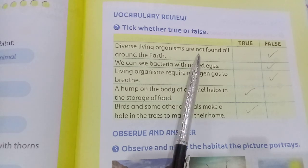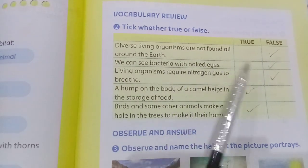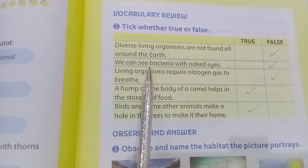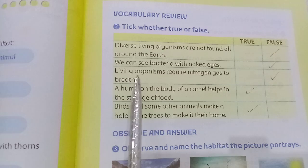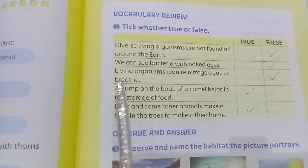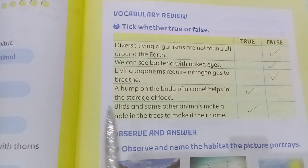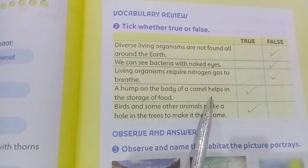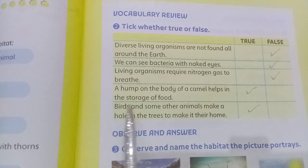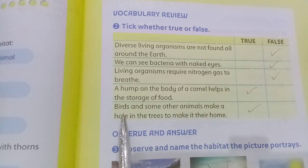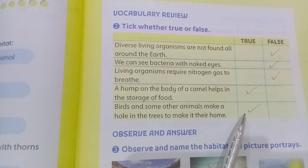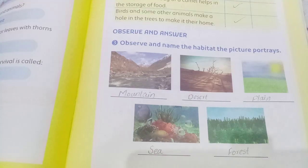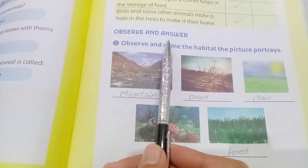Vocabulary review — tick whether true or false. Diverse living organisms are not found all around the earth — false. We can see bacteria with naked eyes — false. Living organisms require nitrogen gas to breathe — false. A hump on the body of a camel helps in the storage of food — true. Birds and some other animals make a hole in the trees to make it their home — true.